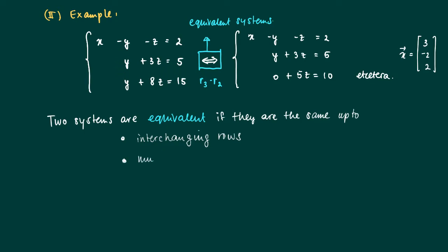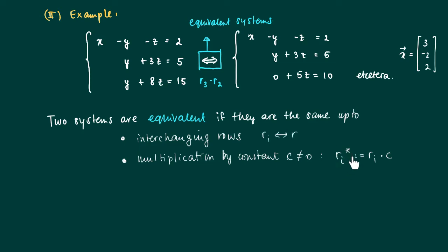Another operation we saw is multiplication by a nonzero constant. If we multiply a row by a constant c, unequal to 0, we can return to the original row by multiplying by 1 over c. So if we define row i* as row i times c, we can get back — these operations still give equivalent systems.